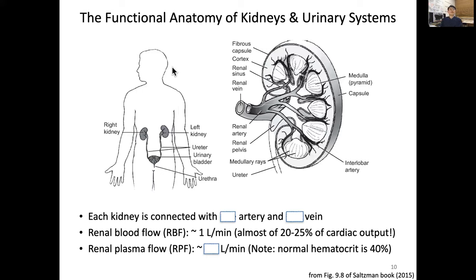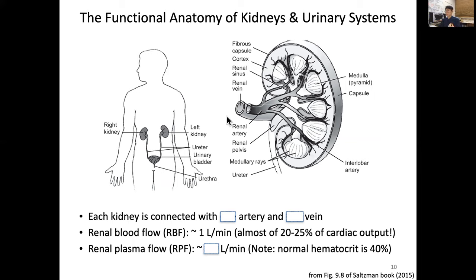Let's start with the big picture of kidney anatomy and function. Our urinary system has both left and right kidneys, which collect urine through the ureter. The ureter goes down to a collecting place called the urinary bladder, and from the bladder to the outside is connected through what's called the urethra.